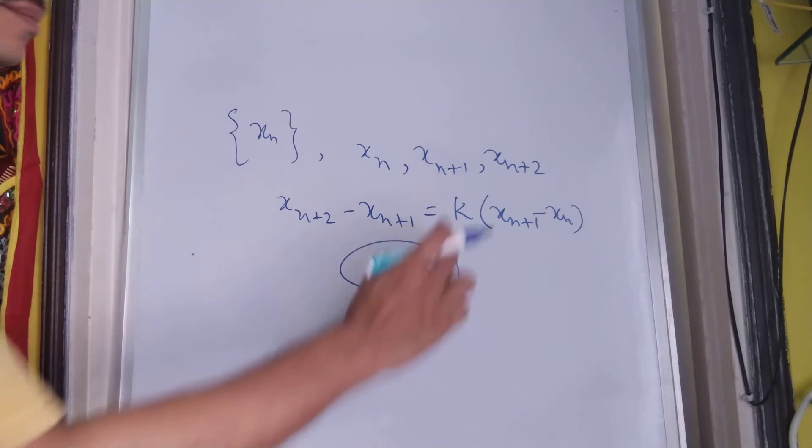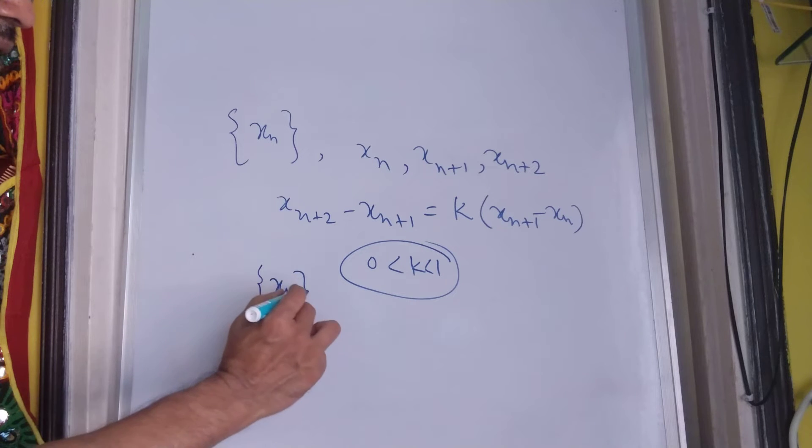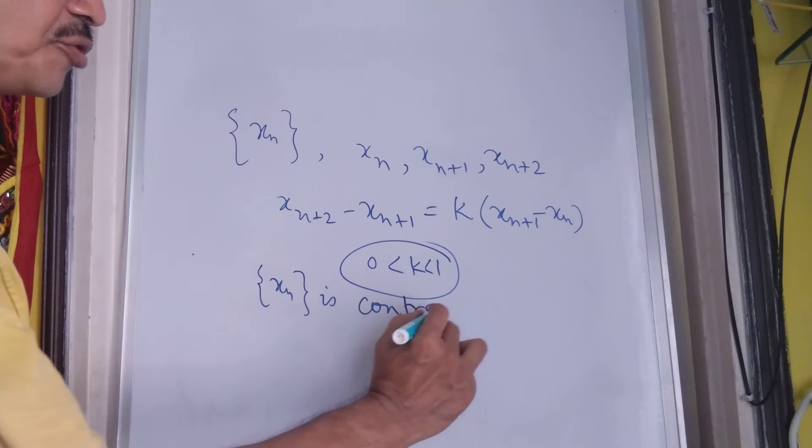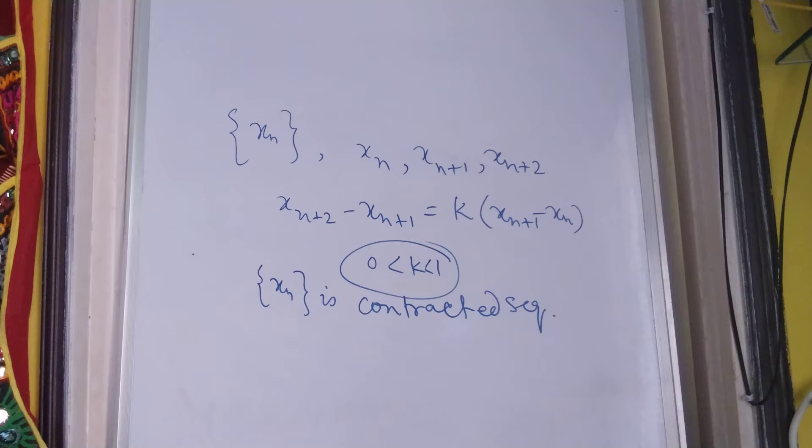That means this is a proper fraction. Then this sequence is contracted sequence and it will be always convergent.